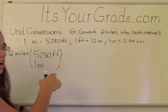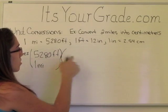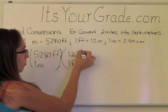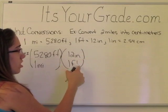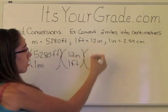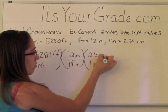Now, the feet is on top, so we need to have feet on bottom to cancel out. So one foot will go on bottom and 12 inches will go on top. Inches is now on top, so inches needs to go on bottom in the next conversion factor. One inch is 2.54 centimeters.